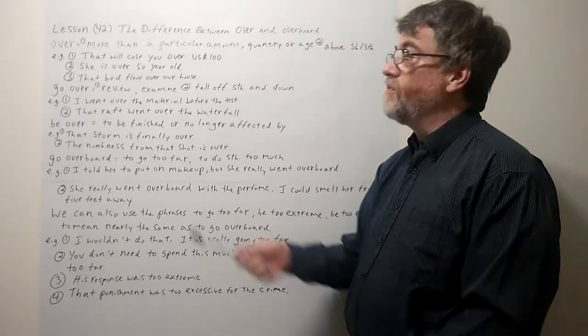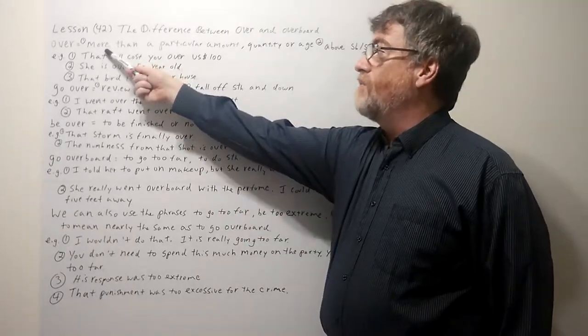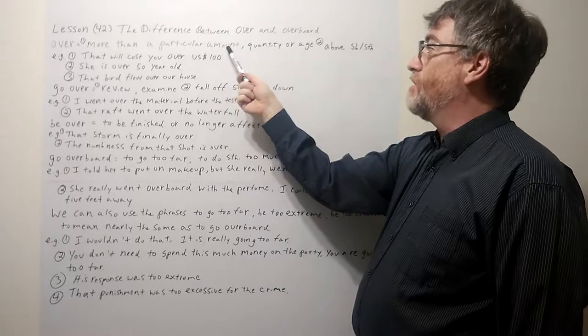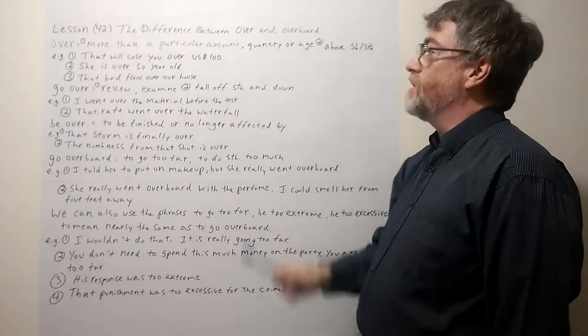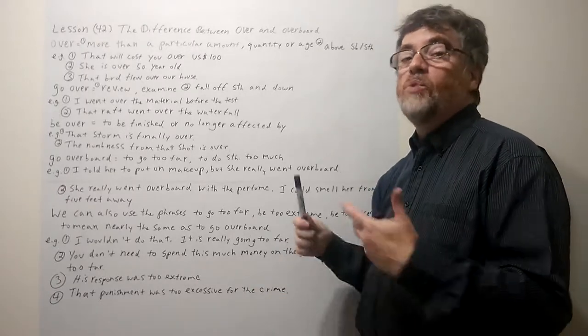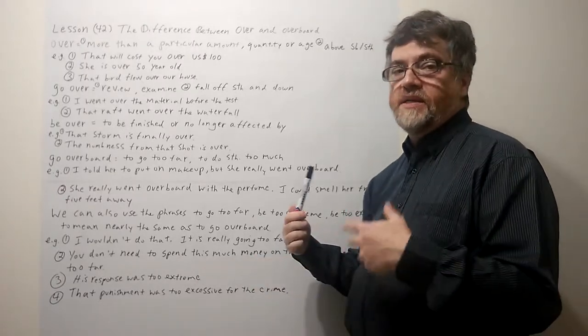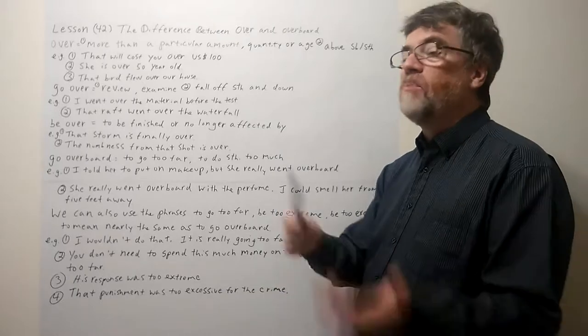Let's take a look at the definition of over. Over really means more than a particular amount, quantity, or age, or it can also mean above somebody or something. So it does not necessarily mean too much. It does not mean necessarily too excessive. It just means more than something.